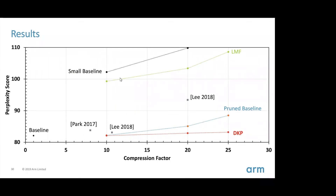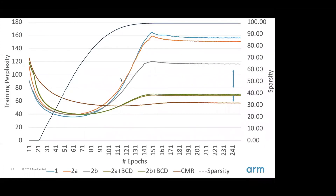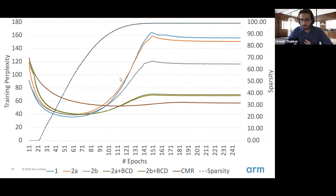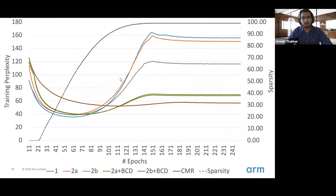Controlling the sparsity is something you can do out of the box using tools provided by TensorFlow. If you remember the paper 'To Prune or Not to Prune' by Google — I think by Suyog Gupta et al. — they provided a way to control sparsity over time, annealing sparsity slowly as training progresses, and those tools are available within the TensorFlow framework. We just used those tools out of the box.